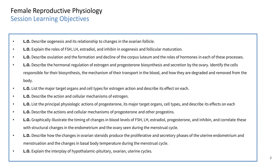We'll illustrate the timing of changes in the blood levels of FSH, LH, estradiol, progesterone, and inhibin, and correlate these with structural changes in the endometrium and the ovaries seen during the menstrual cycle. We'll describe how the changes in the ovarian steroids produce the proliferative and secretory phases of the uterine endometrium, menstruation, and the changes in basal body temperature during the menstrual cycle. We'll explain the interplay of the hypothalamic, pituitary, ovarian, and uterine cycles.